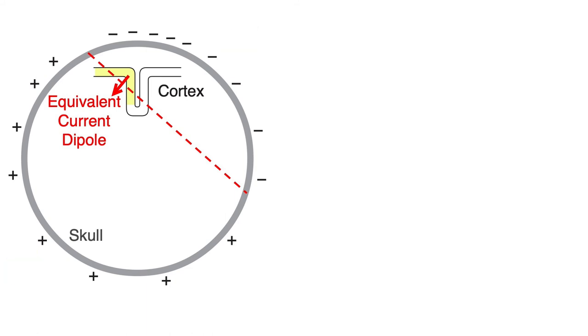I'd like to end this video by making four key points about scalp-recorded ERPs. First, the voltages travel from the neurons to the scalp instantaneously. The moment you see an ERP effect is the moment that is happening in the brain.